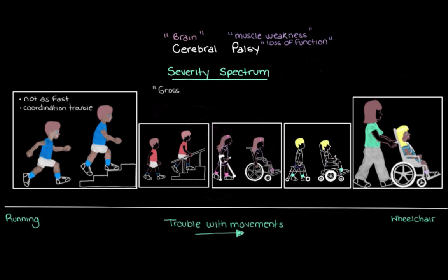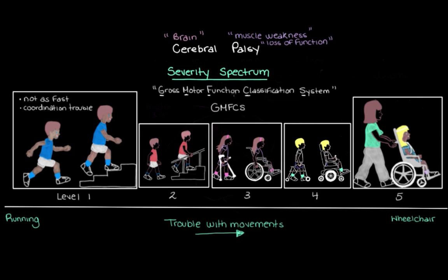What we're looking at here is something called the Gross Motor Function Classification System, or the GMFCS. Each of these pictures represents a different level of the GMFCS. This system is a really useful way of characterizing the severity of someone's cerebral palsy, giving us a fairly standard way to understand a person's movement abilities or impairments.